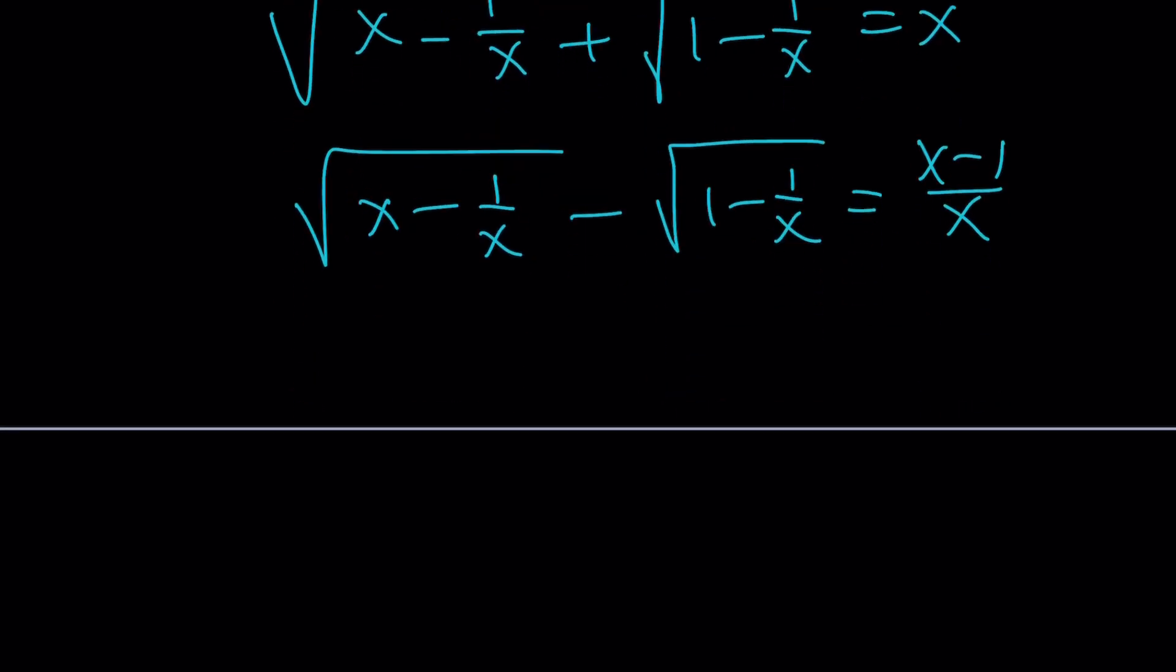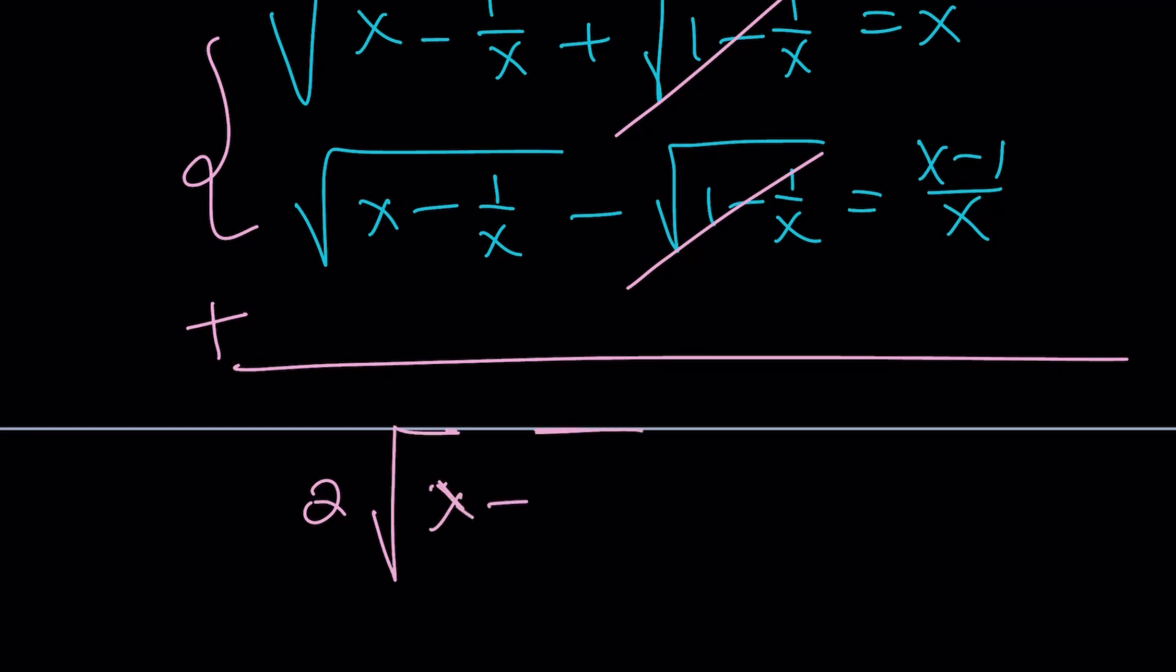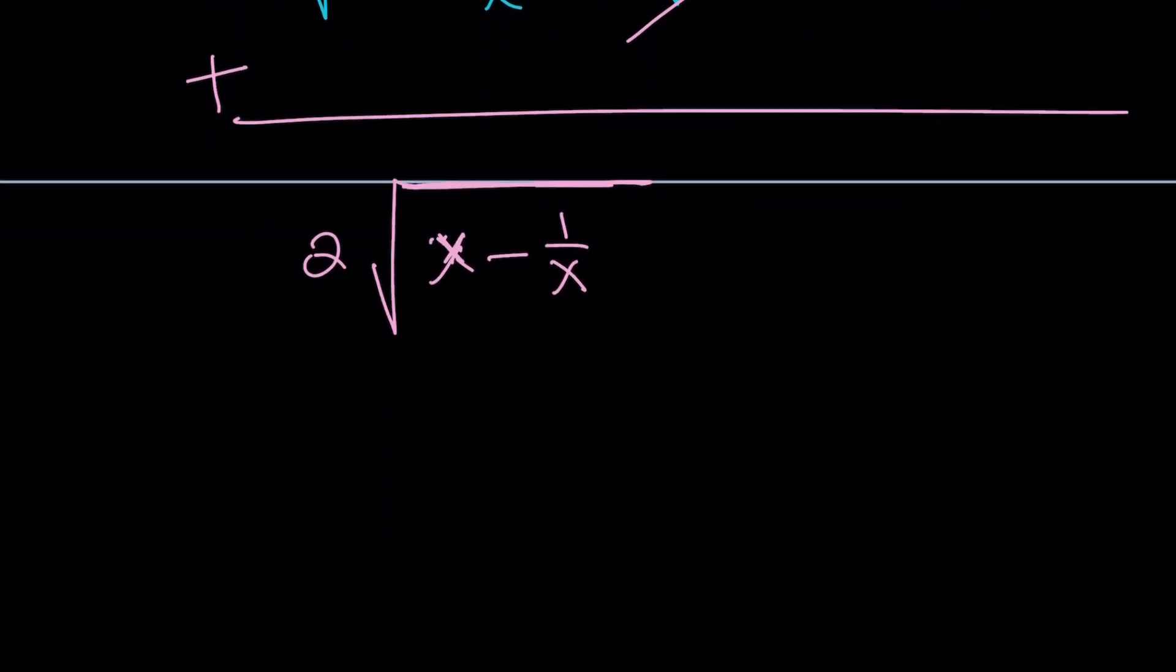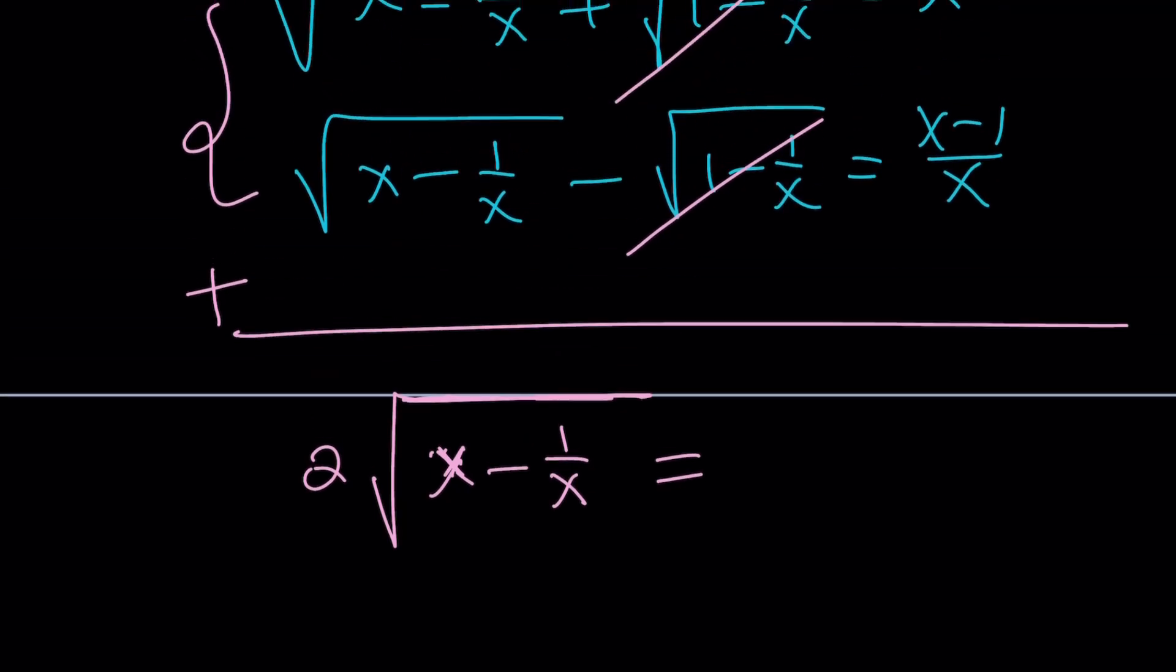Awesome. Now, we got a good system. And we can go ahead and add these up. And when we add these up, the second radical is going to cancel out. We're going to have two times the square root of x minus 1 over x. And then, that equals x plus x minus 1 over x.